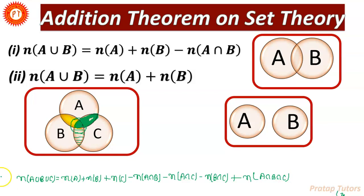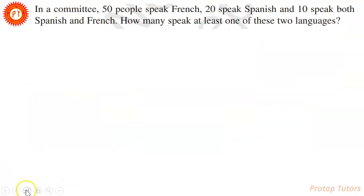Now let's solve some basic and important problems based on this concept. The question says: in a committee, 50 people speak French and 20 speak Spanish, and 10 speak both languages, meaning Spanish and French. How many people speak at least one of these two languages? This problem can be solved in two ways: first by using the addition theorem formula, and second with the help of a Venn diagram.